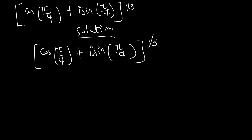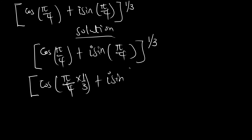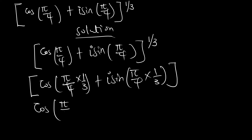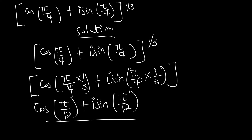Here the modulus is 1. If we raise 1 to the power 1/3, we still get 1. So we multiply the argument by the power: cos(π/4 × 1/3) + i sin(π/4 × 1/3). This gives us cos(π/12) + i sin(π/12) as our final answer.